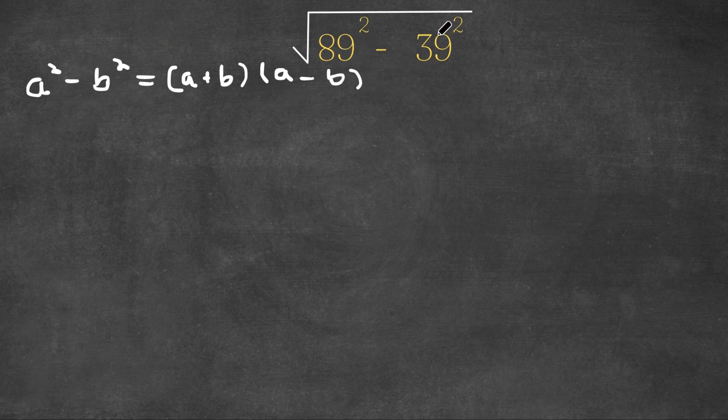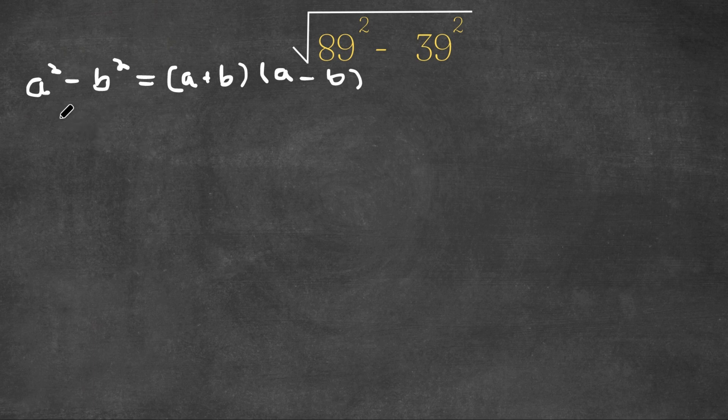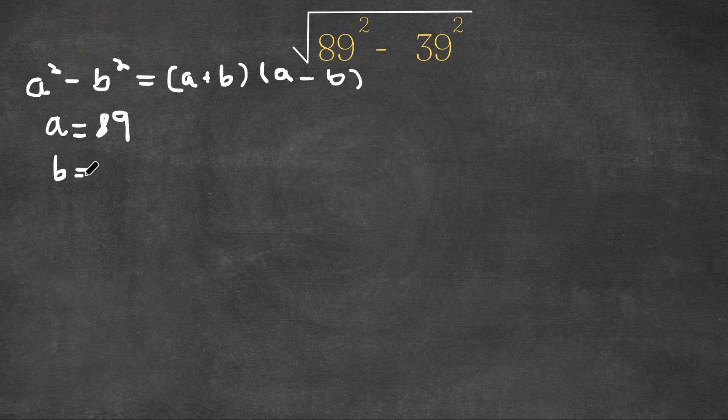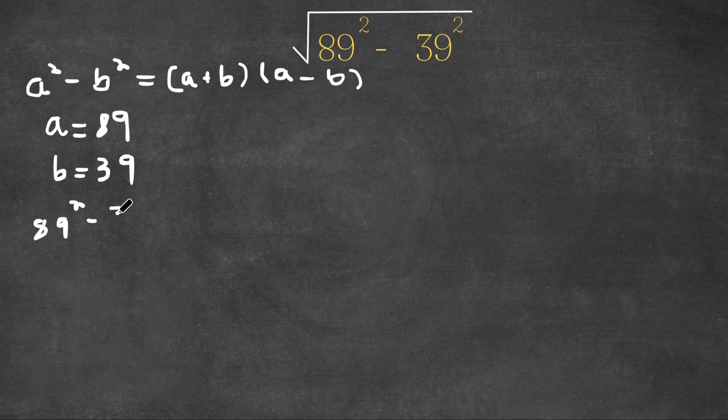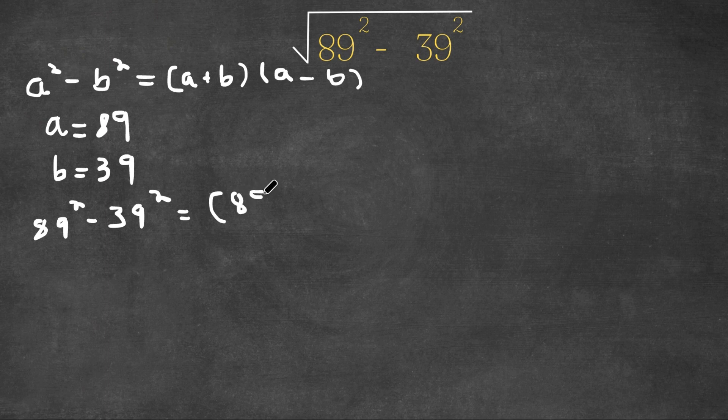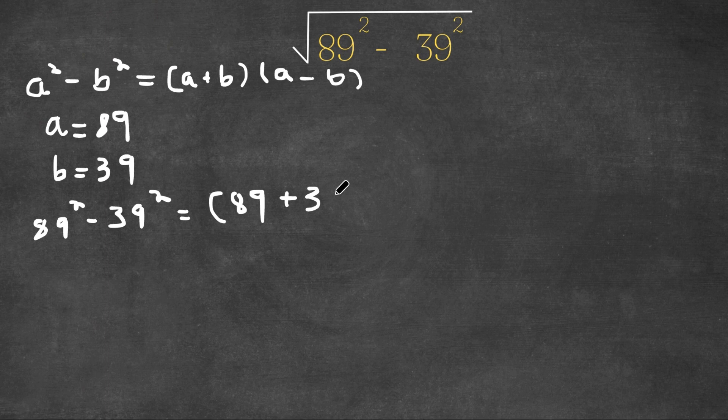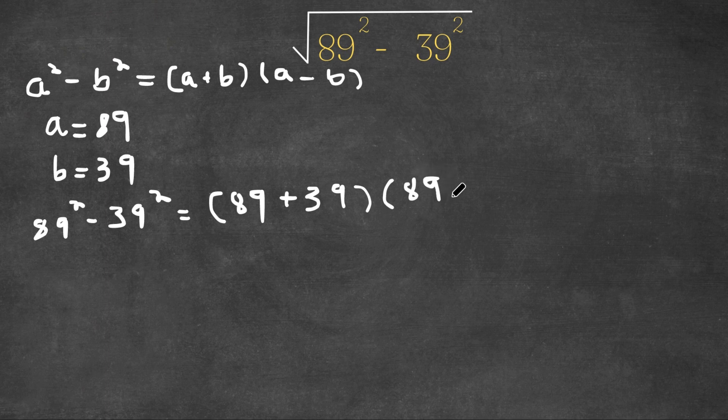So now we could simply plug in these values for a and b, and this would make it much simpler to solve. So a here is equal to 89 and b is equal to 39. So that means that 89² - 39² is equal to (89+39)(89-39).